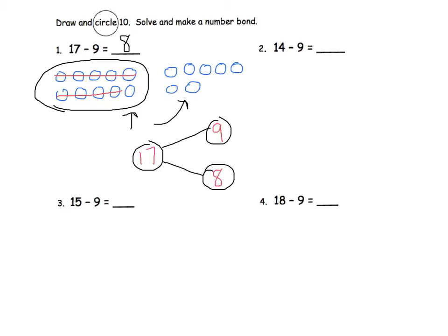This completes the problem. 17 take away 9 equals 8. Problems 2, 3, and 4 can be solved similarly.